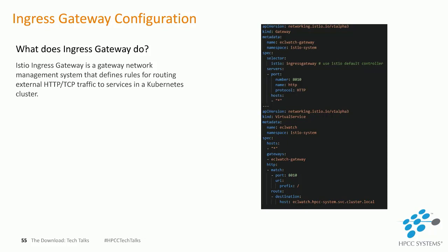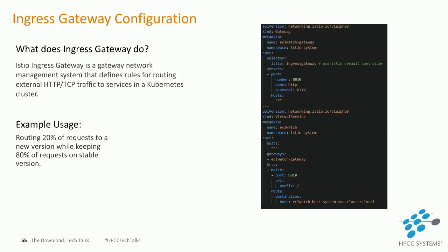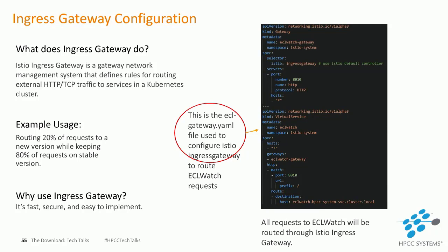Istio's Ingress Gateway provides more tools and functionalities for routing when compared to the basic load balancer. An example usage is routing 20% of all requests to a new version while keeping 80% on a stable version. The benefits of Ingress Gateway are seen in its ability to control every aspect of internet traffic — security, authorization, and networking to different versions. It also has very competitive response times, making it one of the best gateway management systems on the market. You can see a setup for the ingress-gateway.yaml in the image to the right.